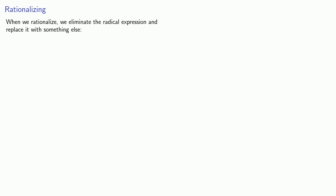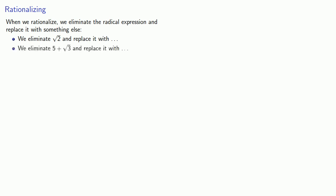And this leads to the idea of rationalizing. When we rationalize, we eliminate the radical expression and replace it with something else. For example, we eliminate a square root of 2 and replace it with something, or we eliminate 5 plus square root of 3 and replace it with something — we'll figure that out.